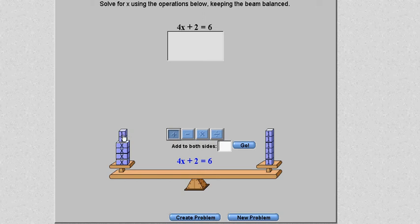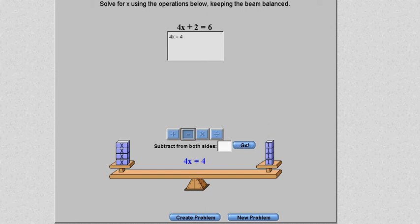So what happens if I take away two ones on this side and take away two ones on that side? If I minus two on that side, I now have four x's on one side and four ones on the other side.